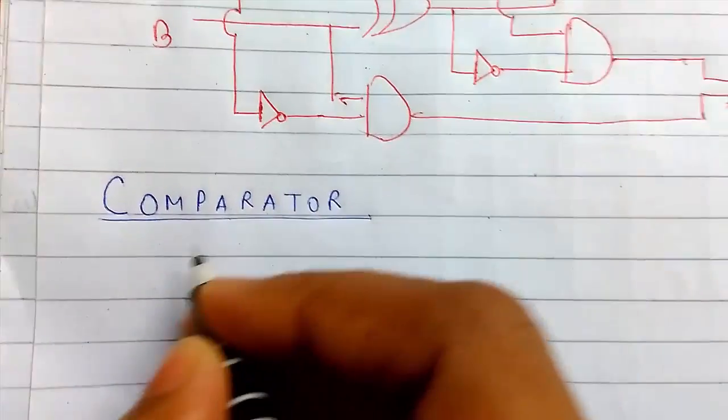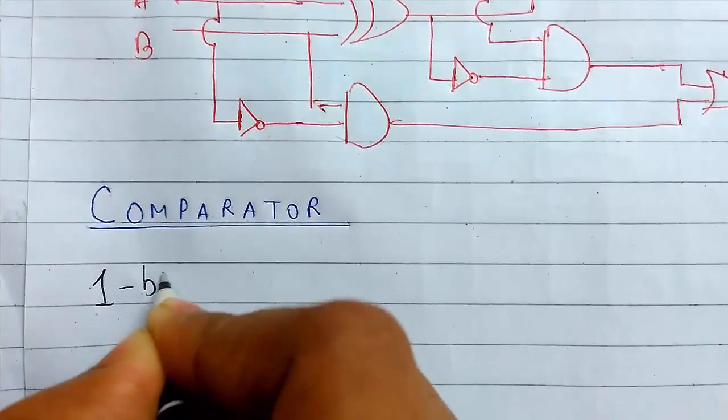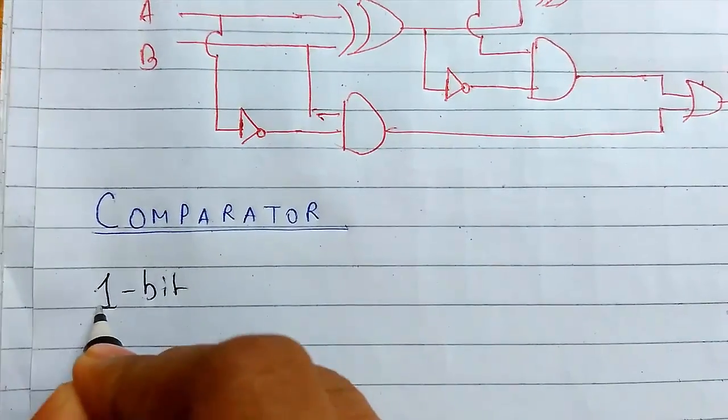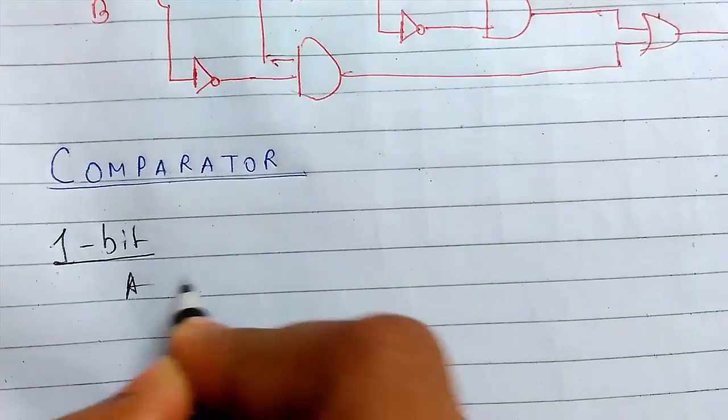First of all we will be doing for three cases, one bit comparator. So first of all we will be studying for one bit. I will make the truth table for it.